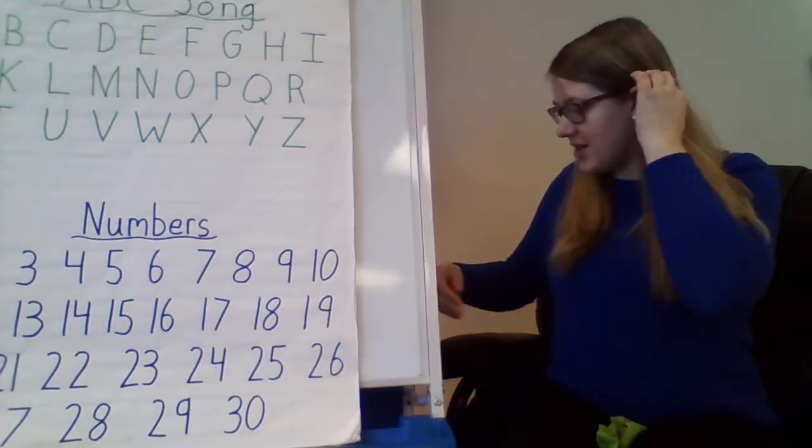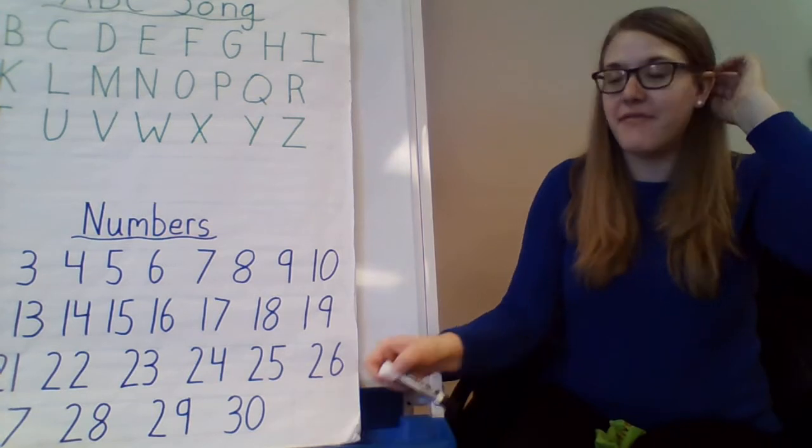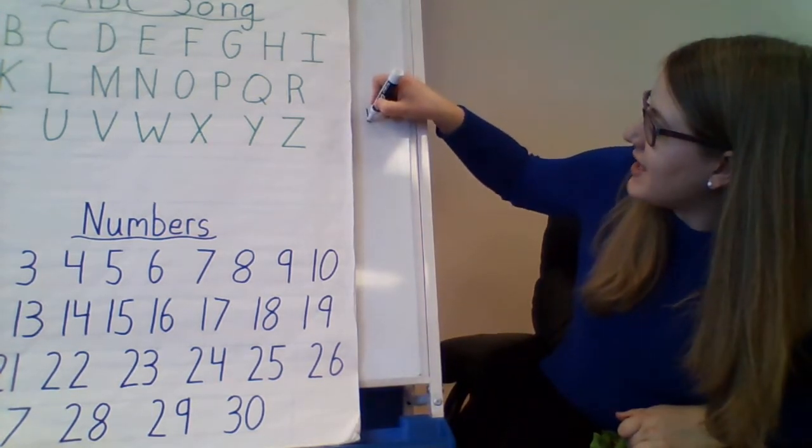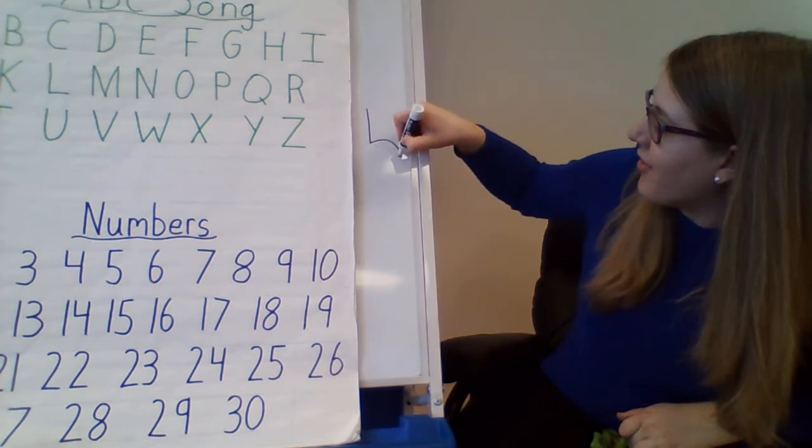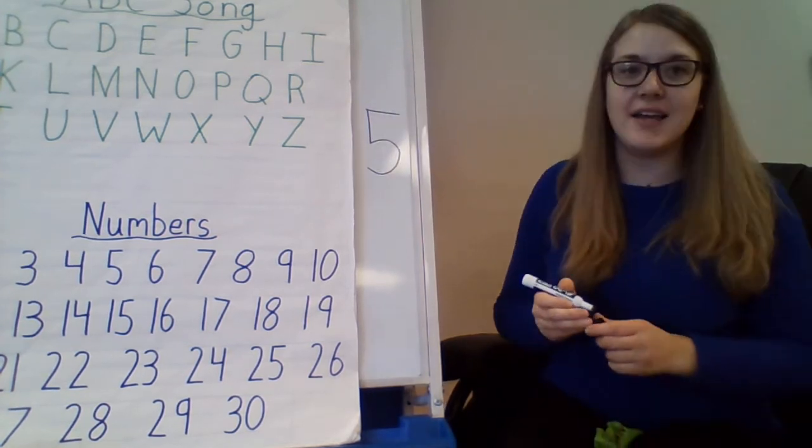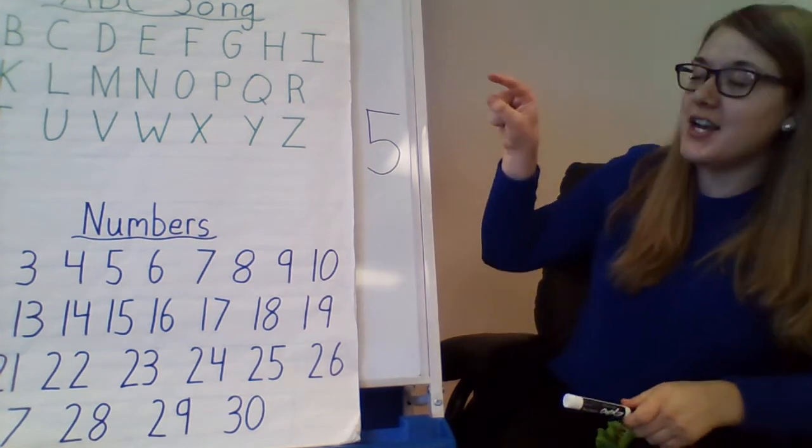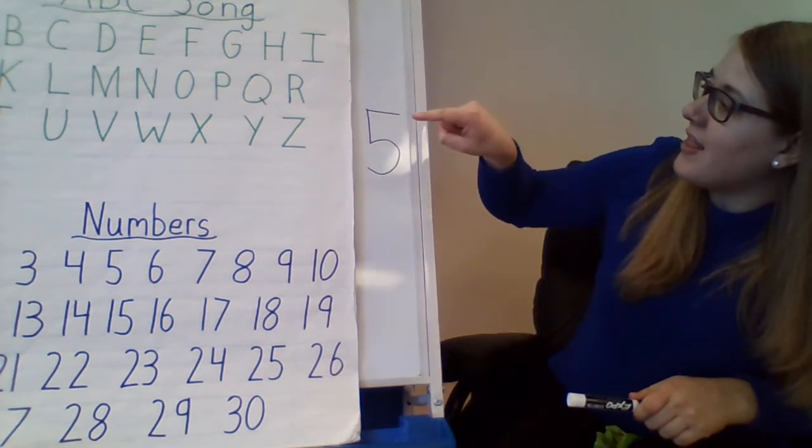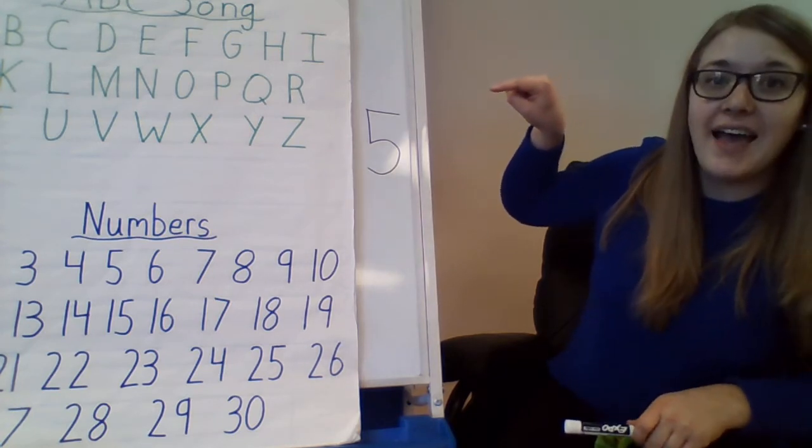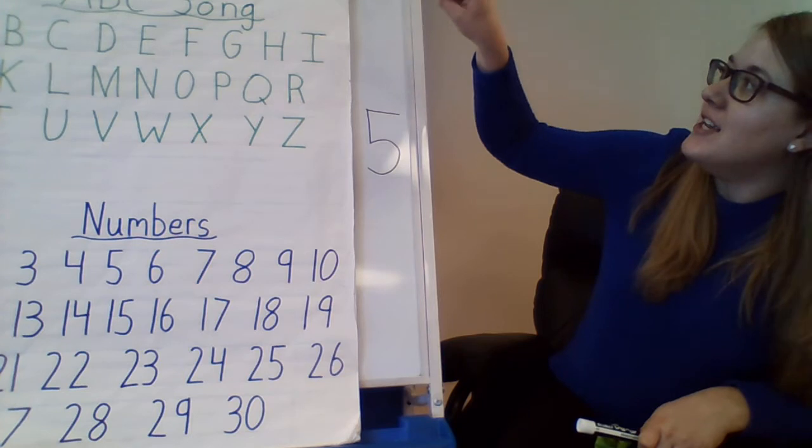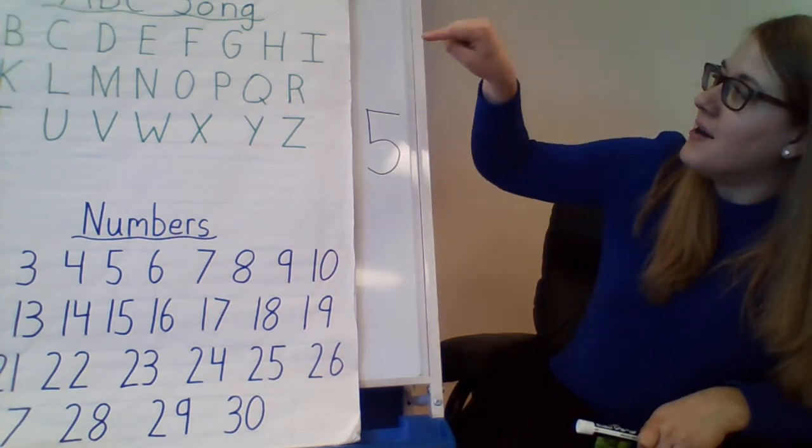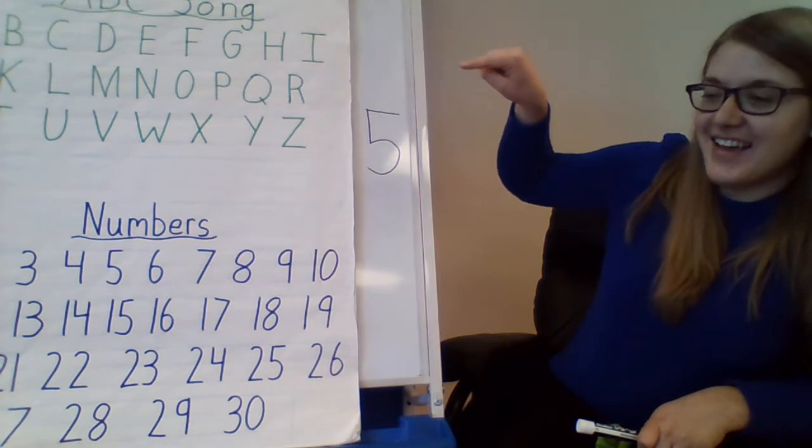Now we are going to make our number 5. You start at the top, a short line down and around like that. Number 5 still needs a hat. Can you try it with me? Start at the top with your finger, a short line down and around like that. Number 5 still needs a hat.